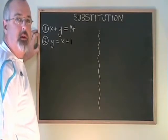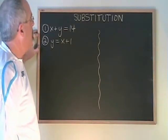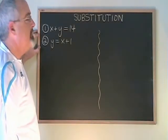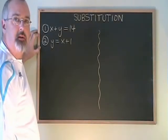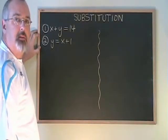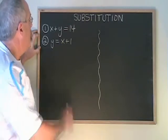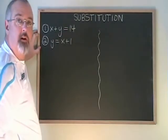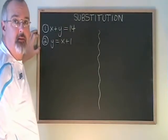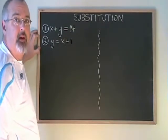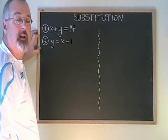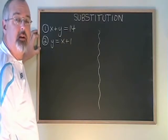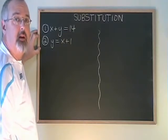With substitution, we are able to solve a system of two equations, which means we are finding the point where these two lines would cross on the graph. Substitution is an algebra trick that allows us to do that without making a graph.